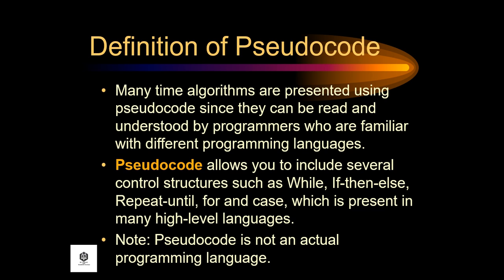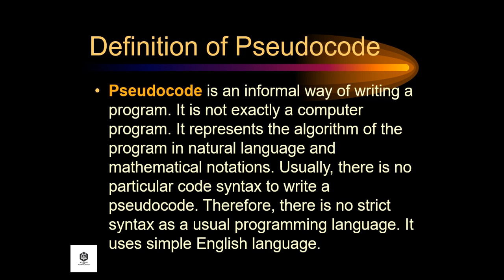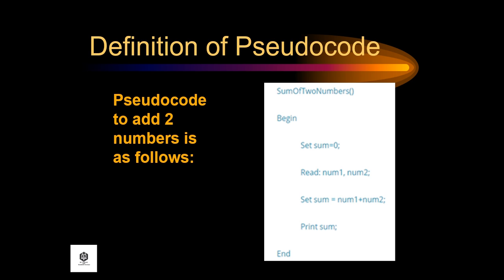Take note: pseudocode is not an actual programming language. This is the sample of pseudocode for linear search. Here, we haven't used any specific programming language but wrote the steps of a linear search in a simpler form which can be further modified into a proper program. Pseudocode is an informal way of writing a program — it is not exactly a computer program. It represents the algorithm of the program in a natural language and mathematical notations. Usually, there is no particular code syntax to write a pseudocode, and therefore there is no strict syntax as in a usual programming language. It uses simple English language.